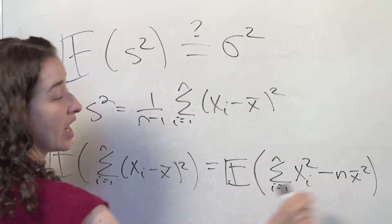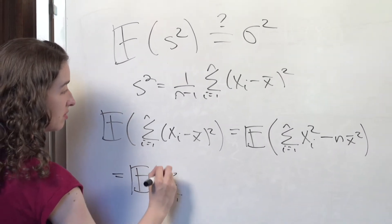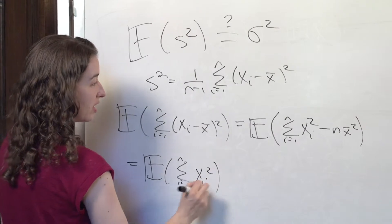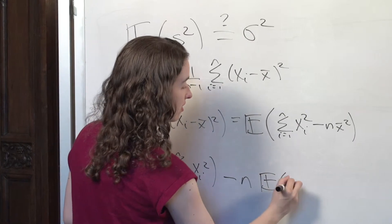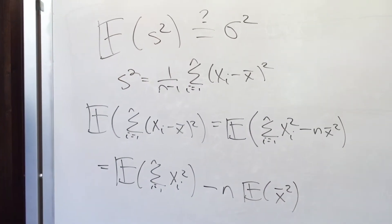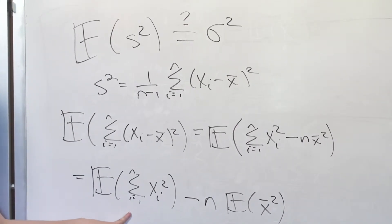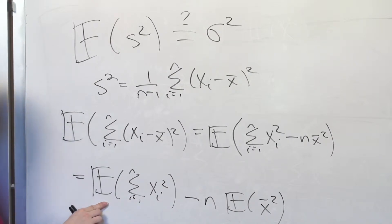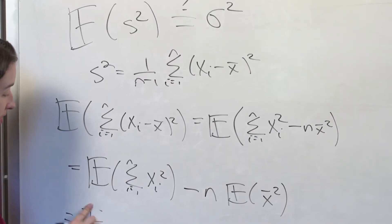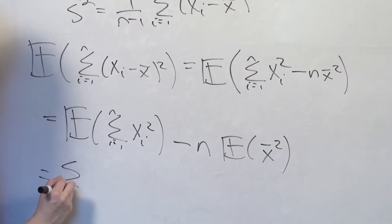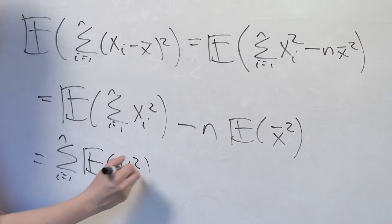Now I'm going to use the linearity of expectation. This is equal to the expected value of the sum of xᵢ squared minus n times the expected value of x-bar squared — since n is just a constant. In this first term, I'll use linearity of expectation again: I get to switch the sum and the expectation because the expected value of a sum is the sum of the expected values. So I get the sum over all values in the sample of the expected value of xᵢ squared.